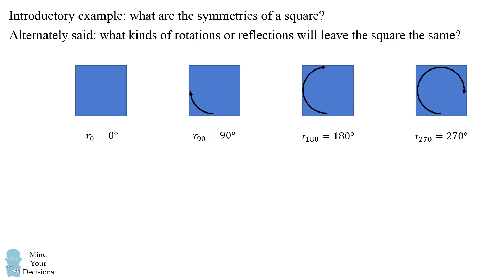But there are other symmetries too. One symmetry is if we do a vertical reflection. Notice the square ends up exactly the same as it started.